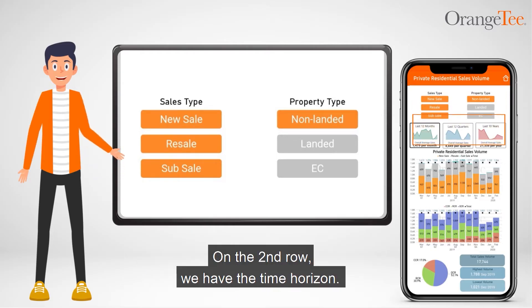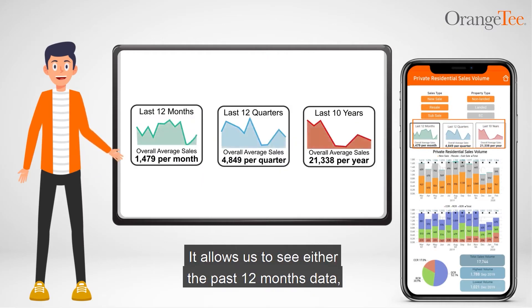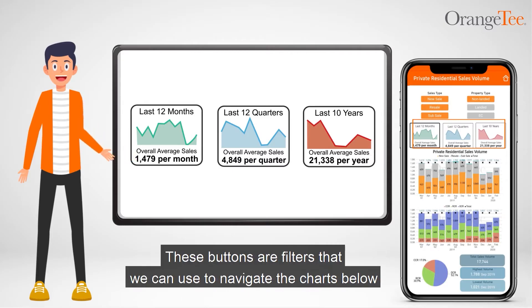On the second row, we have the time horizon. It allows us to see either the past 12 months data, last 12 quarters data, or last 10 years data. These buttons are filters that we can use to navigate the charts below.